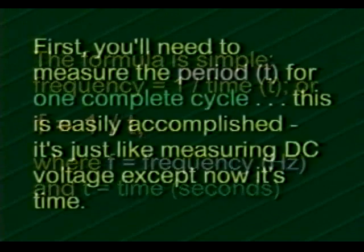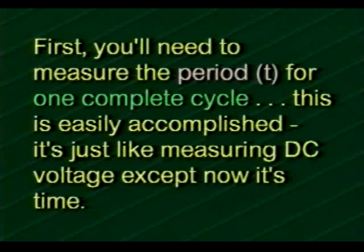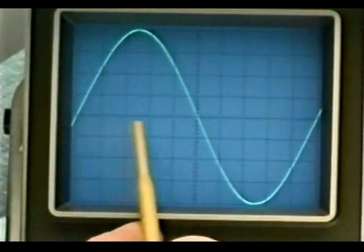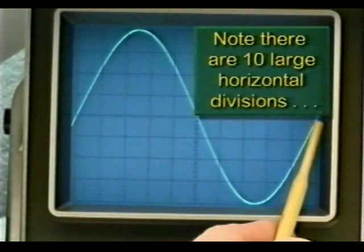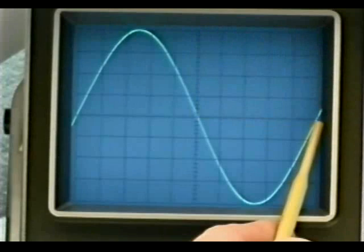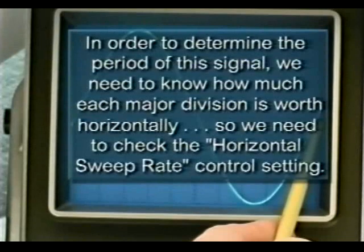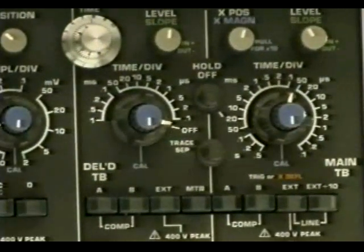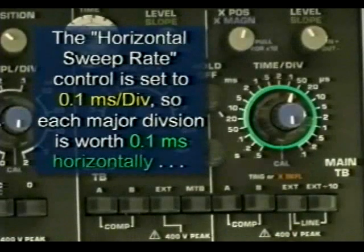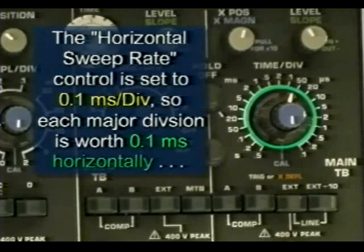Where f is the frequency in hertz and T is the time in seconds. The first thing you'll need to do to calculate a signal's frequency is to measure its period — the time necessary to complete one cycle. This is accomplished by counting the divisions horizontally for one complete cycle, just like reading a ruler. In this case there are 10 large horizontal divisions. To determine the period, we need to check the horizontal sweep rate control setting, sometimes called the time per division control. In this example, it is set to 0.1 milliseconds per division, so each major horizontal division is worth 0.1 milliseconds.